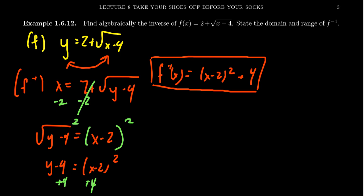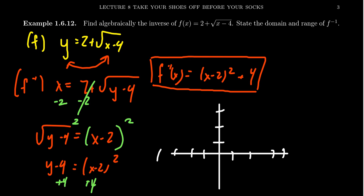In terms of graphing, we can sketch these graphs very quickly. The original function f is the standard square root function shifted to the right by 4 and shifted up by 2. So counting that out — 4 to the right and 2 up — the graph emanates from the point (4, 2). This is the graph for f.